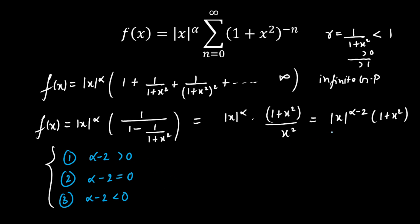For Case 1, when the power (α−2) is positive, the limit as x tends to 0 of f(x) will be equal to 0, because putting x equal to 0 gives 0 in the |x|^(α−2) term, and the rest of the terms give a finite value — so 0 times finite equals 0. This equals f(0), which is also 0. Since the limit equals the functional value, the function is continuous for all values of alpha where α−2 > 0.